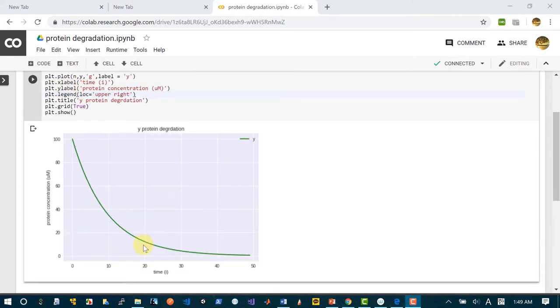So x label is basically the label for x axis or horizontal axis. And plot dot y label is for this one. Protein concentration micromolar. Plot dot legend is for this one. And the location is upper right.